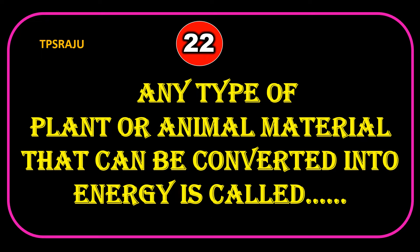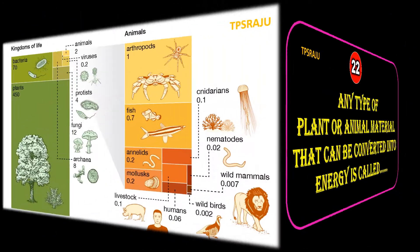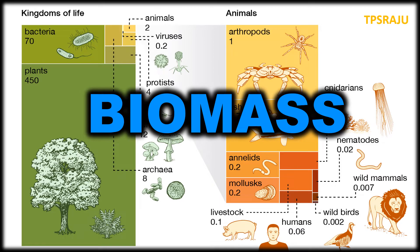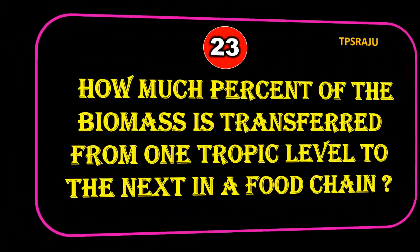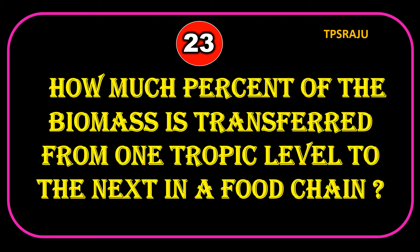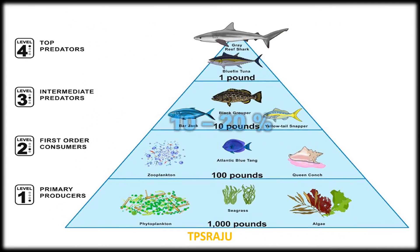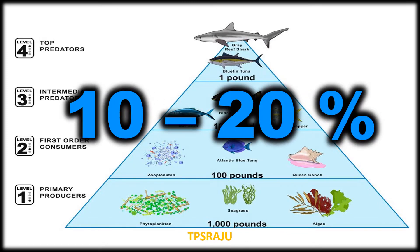Any type of plant or animal material that can be converted into energy is called biomass. How much percent of the biomass is transferred from one trophic level to the next in a food chain? 10 to 20 percent.